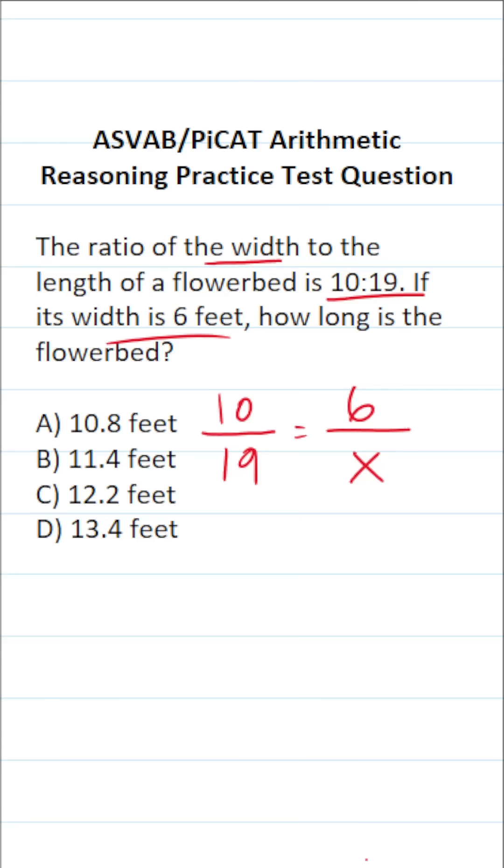You solve proportions via cross multiplication. This becomes 10 times X, which is 10X, equals 19 times 6. So as not to make a mistake, I'm going to do 19 times 6 off to the side. On the ASVAB and PiCAT, you don't get a calculator or reference sheet.